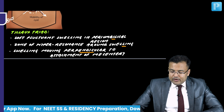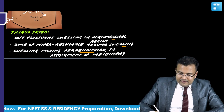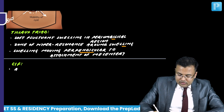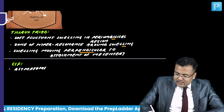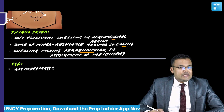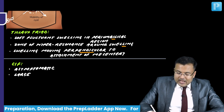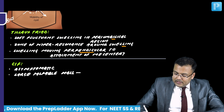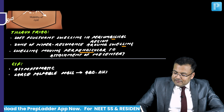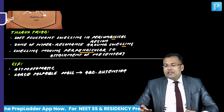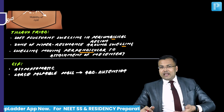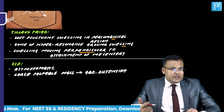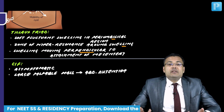So the clinical features or presentation: initially patients are asymptomatic when the swelling is small. But later, when there is enlargement, these patients have a large palpable mass leading to abdominal distension. The age of the patient is around 20 and it is more common in females - so an unmarried female with abdominal distension around age 20-25 could have mesenteric cyst.